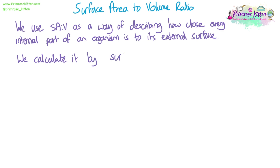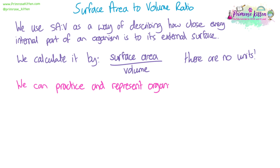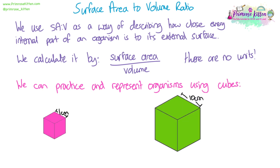We calculate surface area to volume ratio by taking the surface area and dividing it by the volume. Organisms that are irregularly shaped are hard to calculate accurately, so in the exam you'll either be given the values or asked to use cubes or spheres as models. There are also no units — we use millimetres squared and millimetres cubed in the working, but the final ratio has no units.